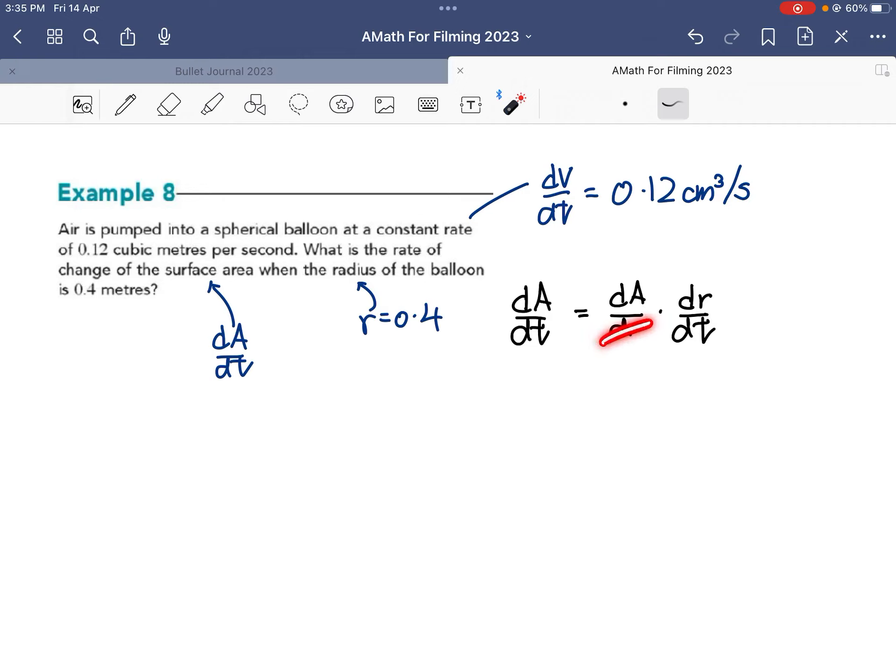But there's a small problem. The small problem is this question gives you rate of change of volume with respect to time, but what I need here is rate of change of radius with respect to time.